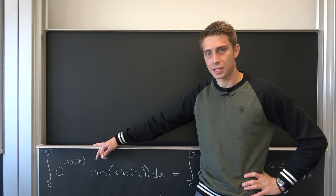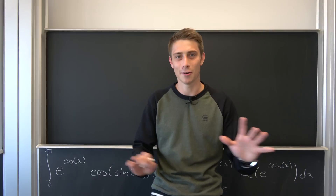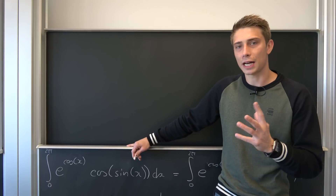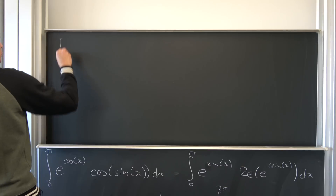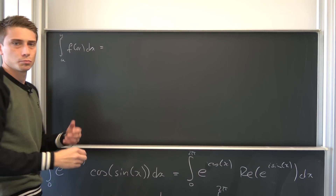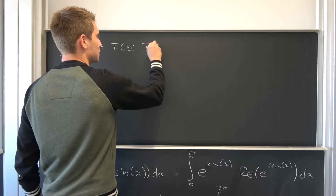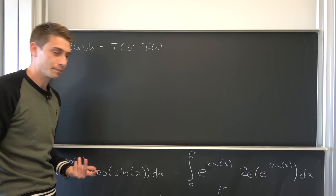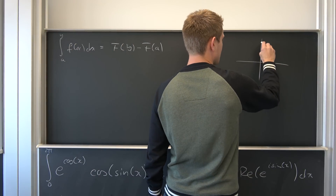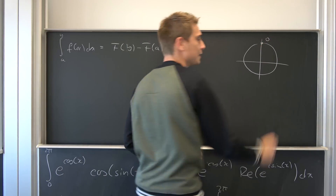So you can tell me in the comments if you know better. We are walking on the unit circle, and if we take a definite integral from a to b of some f of x, we end up with the anti-derivative evaluated at b minus the anti-derivative evaluated at a. And here's the problem: we are integrating over a full circle, and the point zero corresponds to the point two pi.